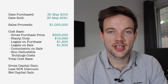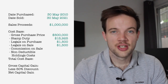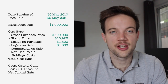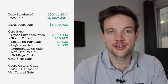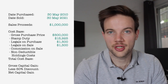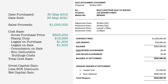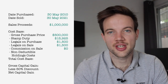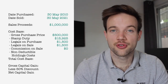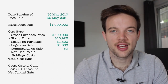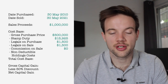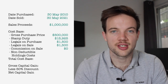The next thing to consider is any commission on sale — fees paid to a real estate agent for selling your property. This will usually appear on your sale settlement statement. In our example we don't have that, assuming the property was sold without a real estate agent. But if you did have an agent's fee, you would include it in the cost base calculator here.